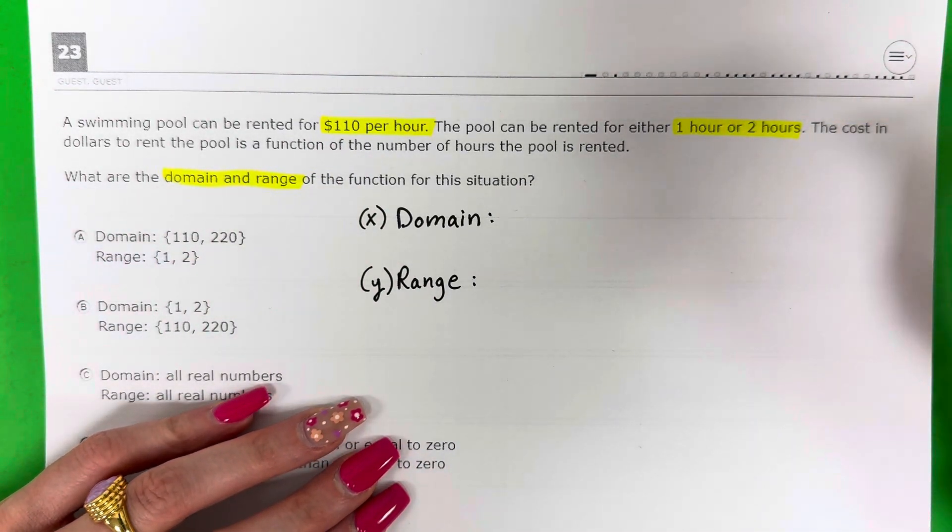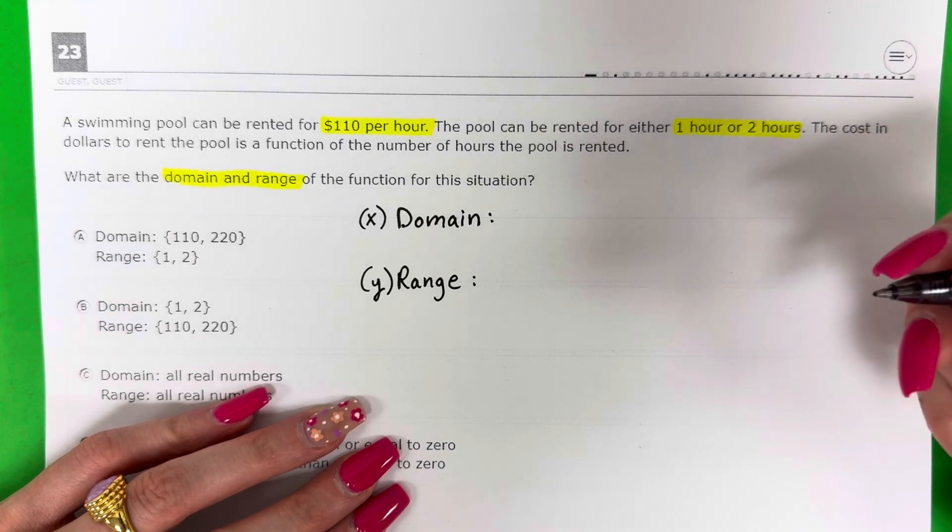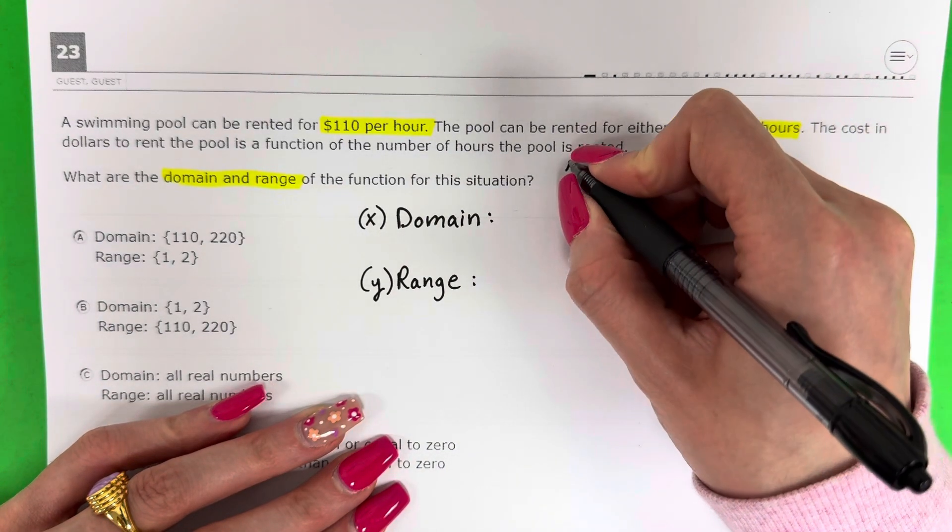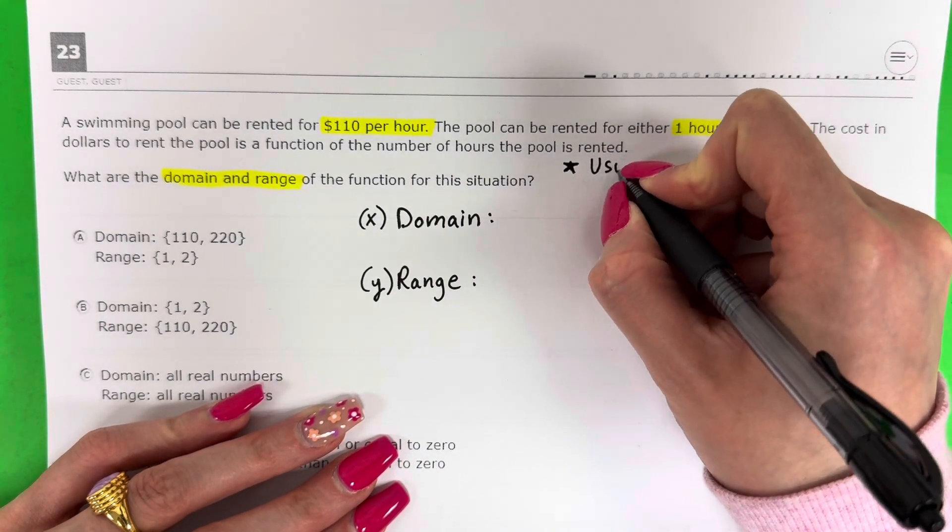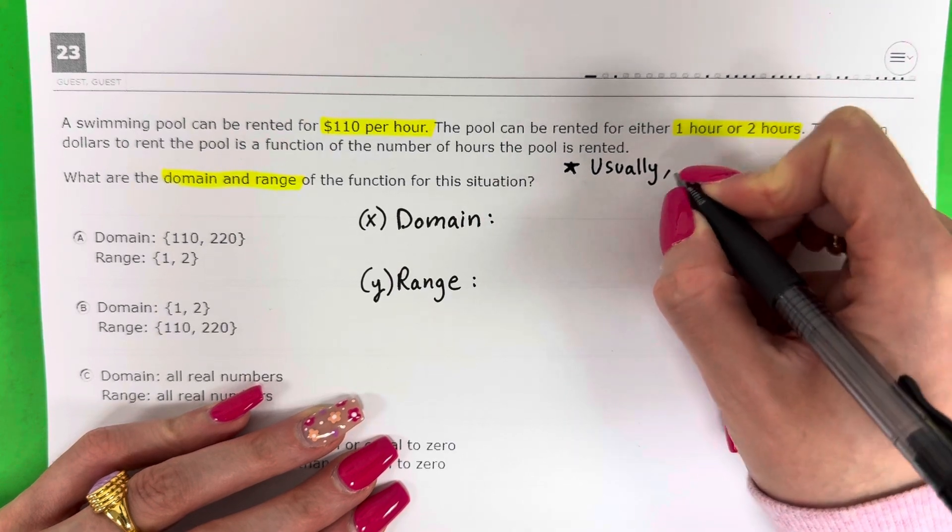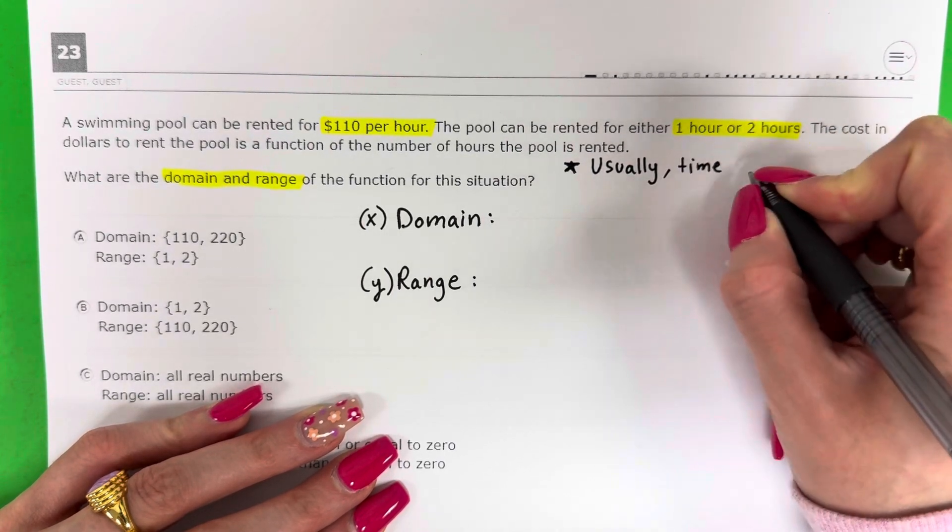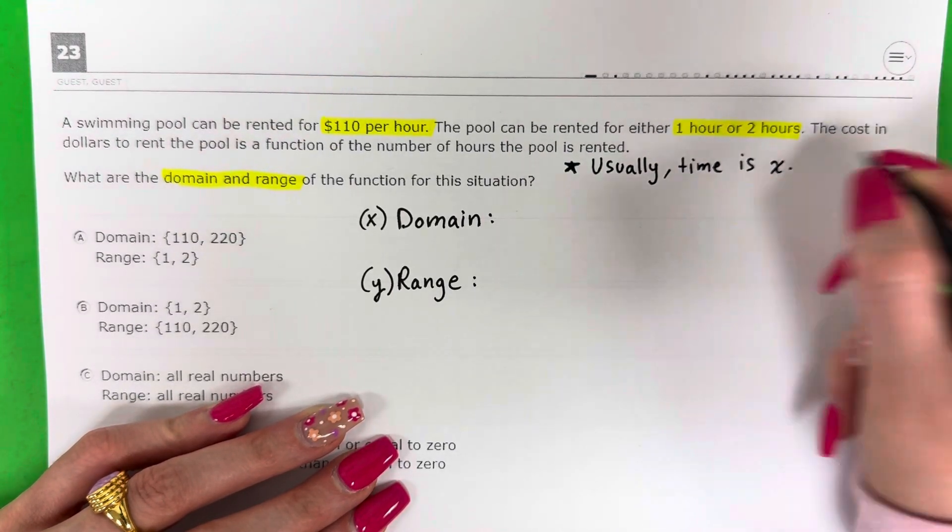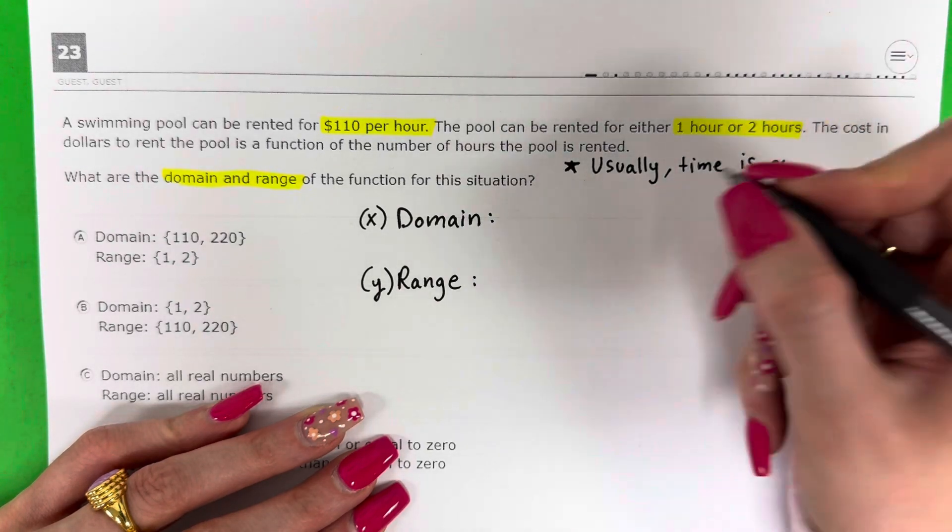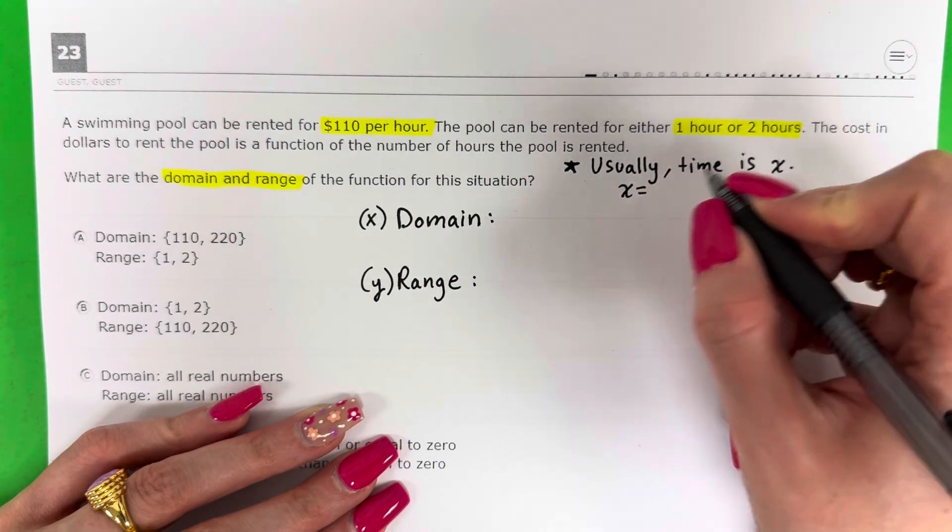I'm going to tell you from now, usually time is x. I'm going to tell you this little trick. Usually time is x. So what's my time? Hours.